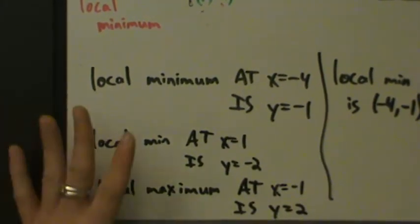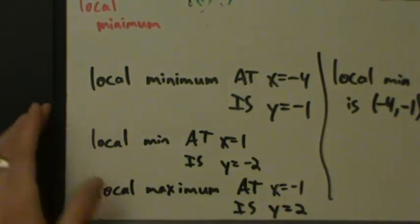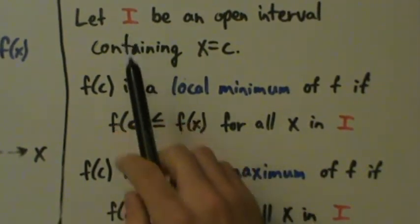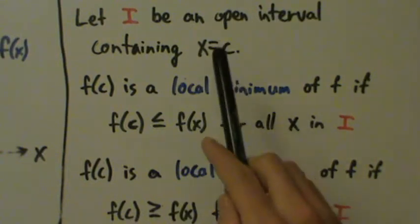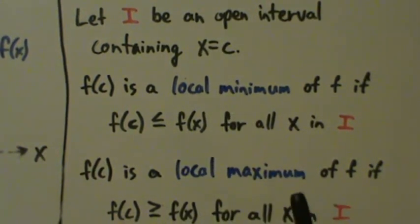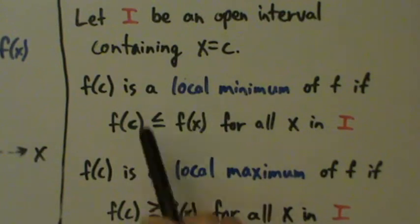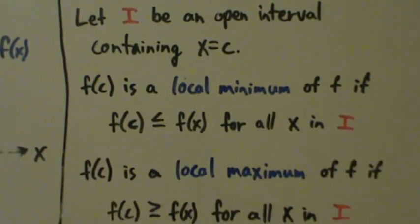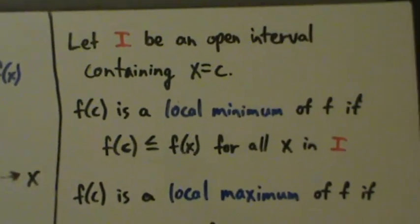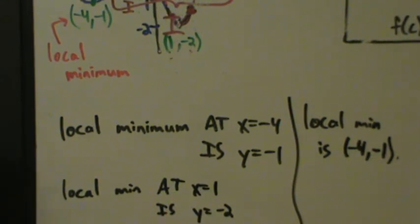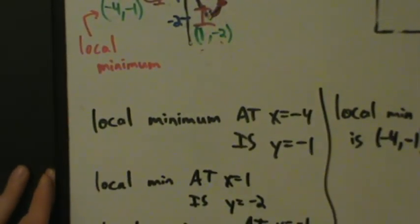That's pretty much it for the first part of the intro to mins and maxes. There is one more little detail: because we have to have an open interval containing x equals c, local mins and local maxes cannot happen at endpoints. If your function is only defined from x equals a to x equals b, you can't have a local min or local max at those endpoints, because you can't put an open interval around an endpoint value. In the next video, we'll give a few more definitions and another example, and then we'll start talking about critical points.